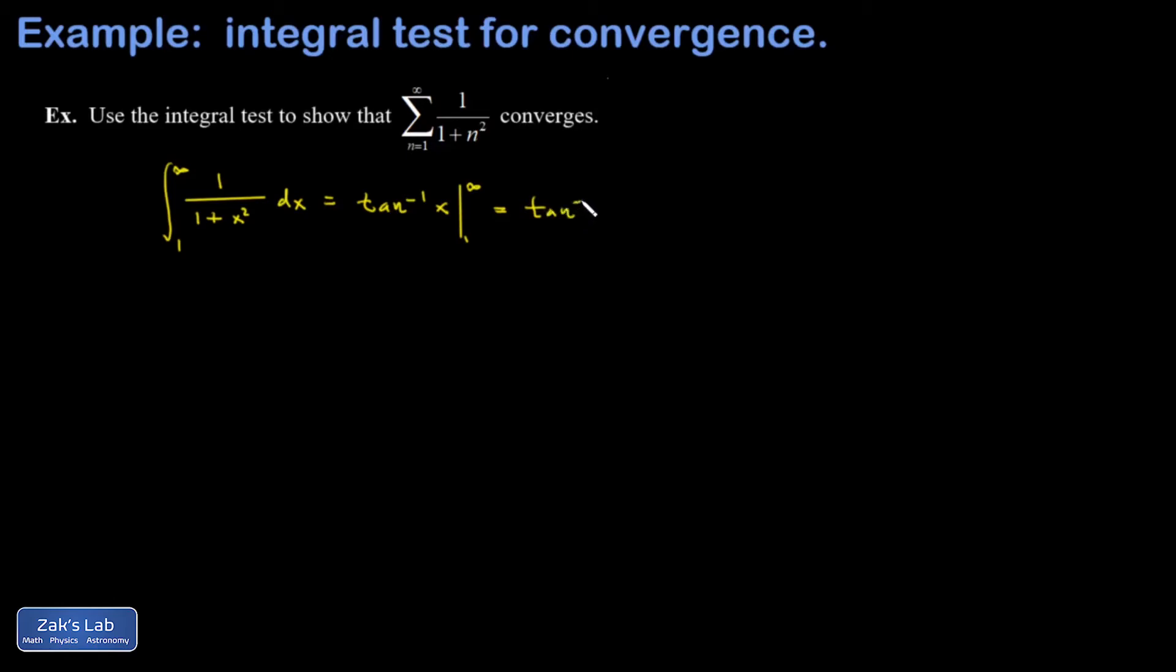So I get the angle whose tangent is positive infinity. That's just π over 2 minus the angle whose tangent is 1. That's just π over 4. And I come out with a nice finite result of π over 4. Therefore, our original series converges.